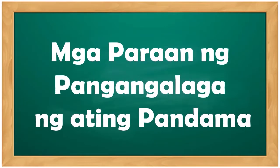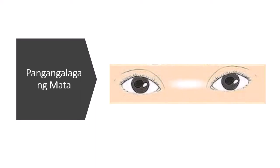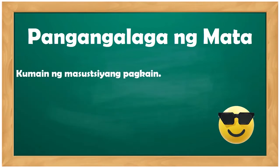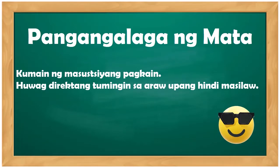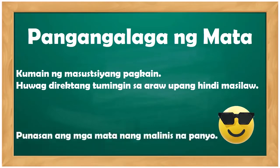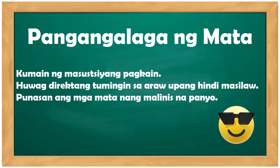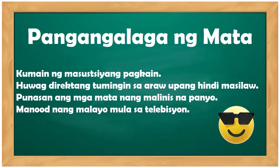Mga paraan ng pangangalaga ng ating pandama. Ano ang mga dapat nating gawin para hindi masira ang mga bahagi ng katawan ng ating pandama? Una, pangangalaga sa ating mata. Kumain ng masustansyang pagkain — mahalaga ito para mapanatiling malinaw ang ating mata. Pangalawa, huwag direktang tumingin sa araw upang hindi masilaw. Pangatlo, punasan ang mga mata ng malinis na panyo. Manood ng malayo mula sa telebisyon kasi nakakasira ng mata ang radisyon.